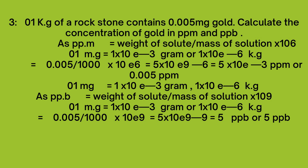Problem number three: 0.1 kilograms of rock stone contains 0.005 milligrams of gold. Calculate the concentration of gold in parts per million and parts per billion. Parts per million is calculated as weight of solute divided by mass of solution multiplied by 10^6. Since 1 milligram equals 10^-3 grams, we get 0.005 divided by 1000, multiplied by 10^6, which equals 5 × 10^-3 parts per million.